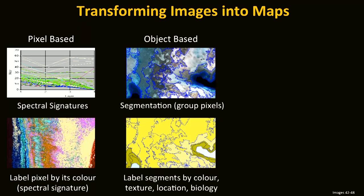Another way to do it is an object-based approach, where segments are characterized by groups of pixels using their texture, color, and size. The next step in the object-based approach is that after segmentation, we look at how to label these different characteristics using their texture, segmentation, color, location, and biological characteristics.